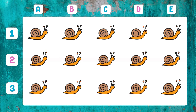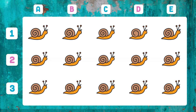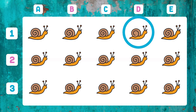What snail is different from the rest? The snail that appears in 1D — it has a different shell.